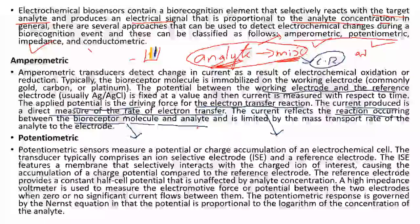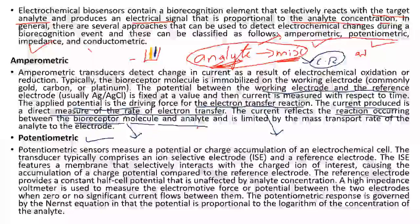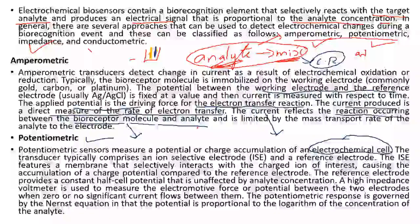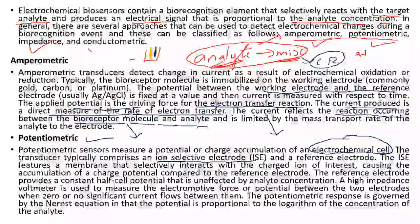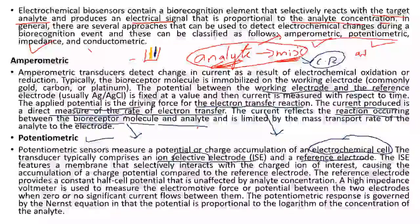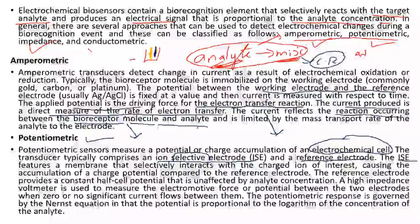The next sensor is the potentiometric type. Potentiometric sensors measure a potential or charge accumulation that happens in the electrochemical cell. The transducer typically comprises an ion selective electrode (ISE). There are two electrodes: a reference electrode and a working electrode — the ion selective electrode.